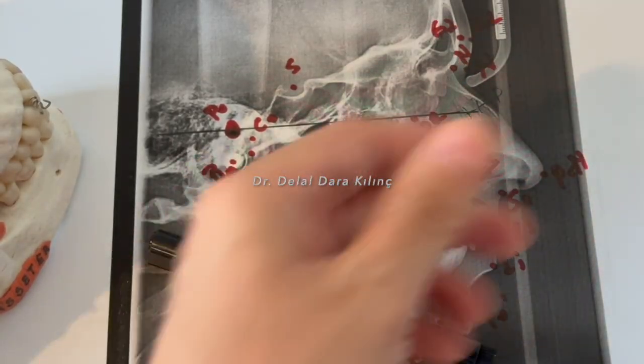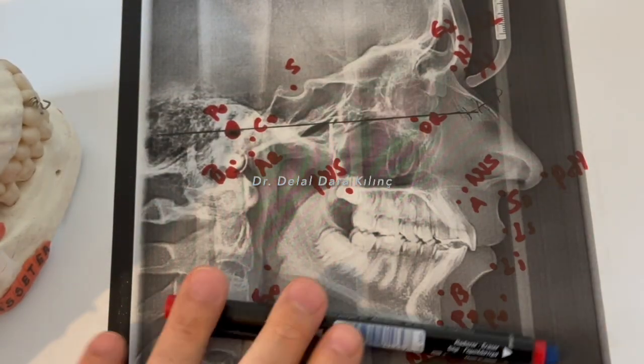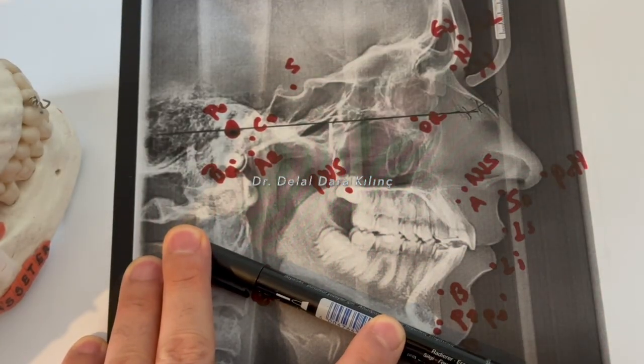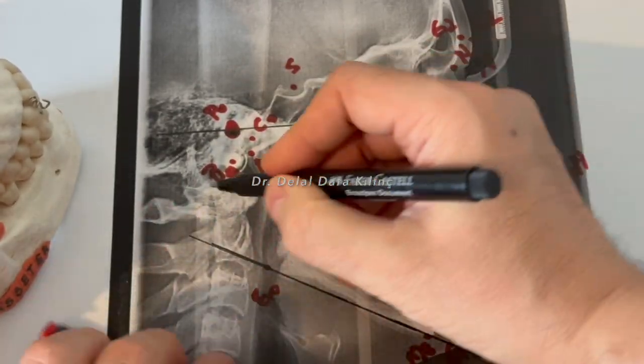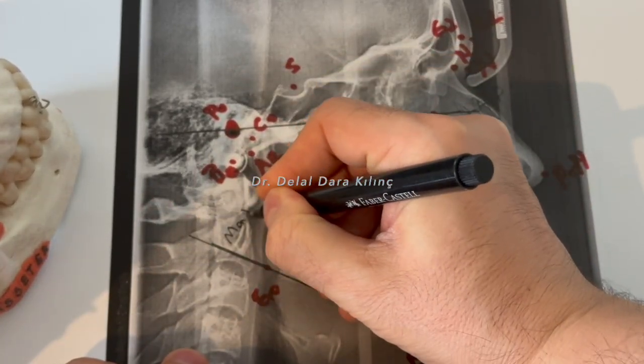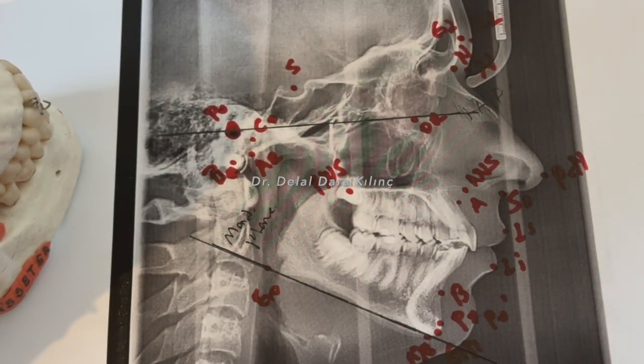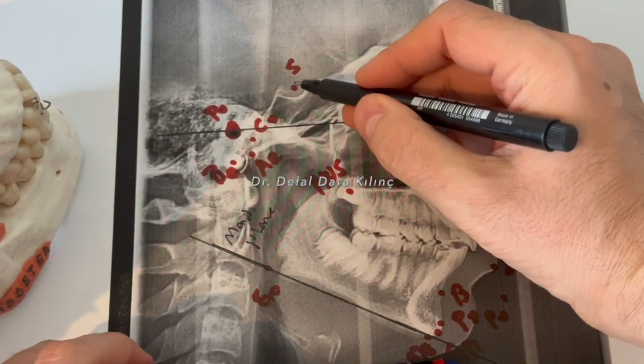As mandibular plane, I'm going to draw it with black. Yes, here, Gonion-Menton, it's the mandibular plane. This is the mandibular plane, here you see it. And let's draw the Sella-Nasion line, it's passing from the point Sella.